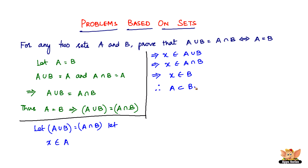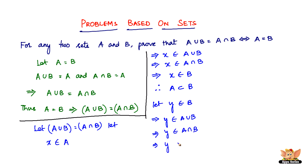Now we need to show B is a subset of A. Let Y belong to B — that implies Y belongs to A union B, and that implies Y belongs to A intersection B, and that implies Y belongs to A as well. So therefore, B is a subset of A, because Y belongs to B as well as to A.